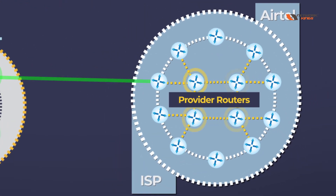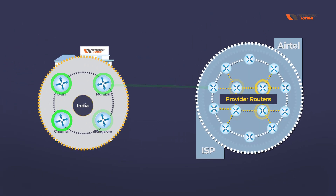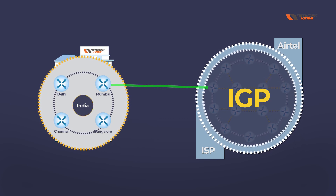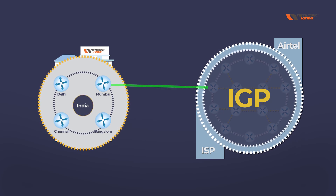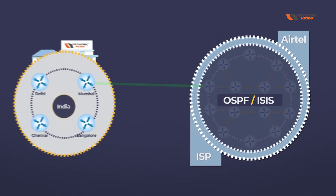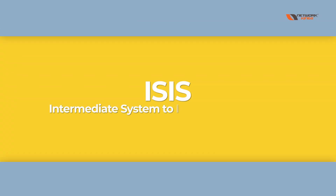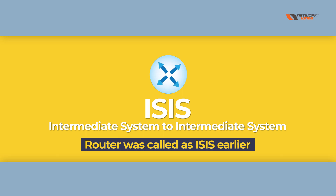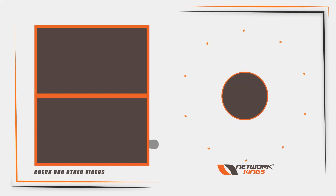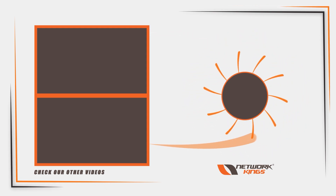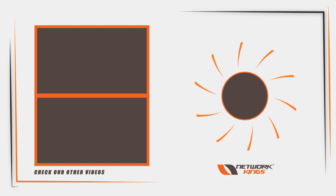For connectivity between all routers inside the ISP, we run an Interior Gateway Protocol — either OSPF or IS-IS. IS-IS stands for Intermediate System to Intermediate System. Many service providers use OSPF, while others use IS-IS.